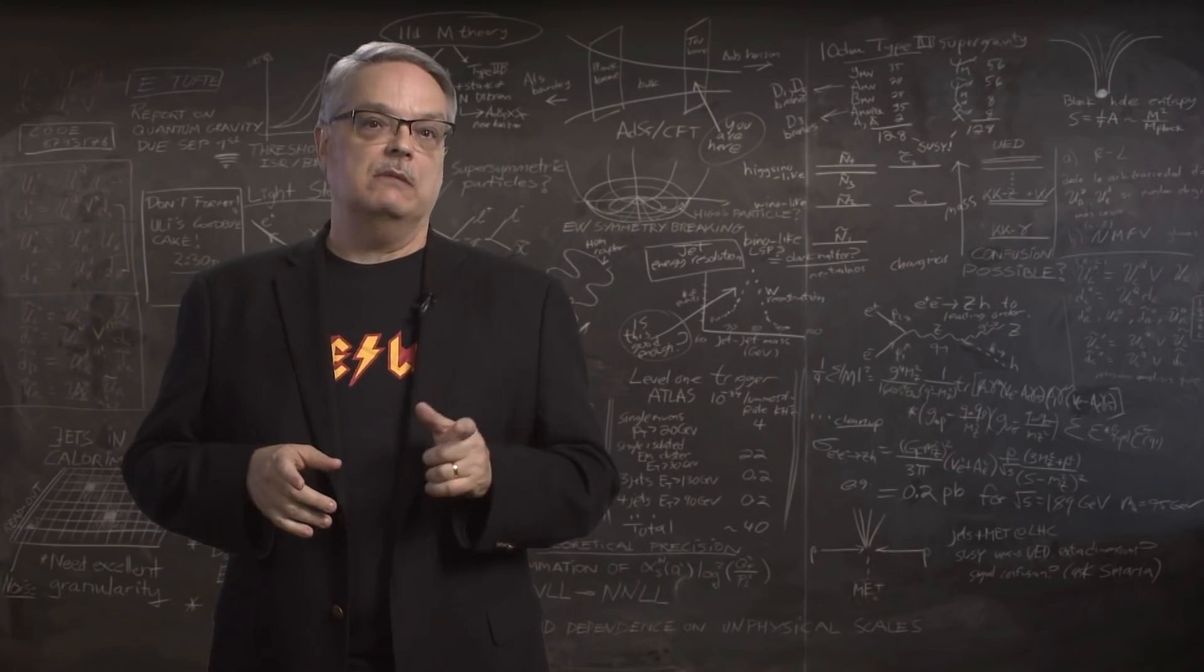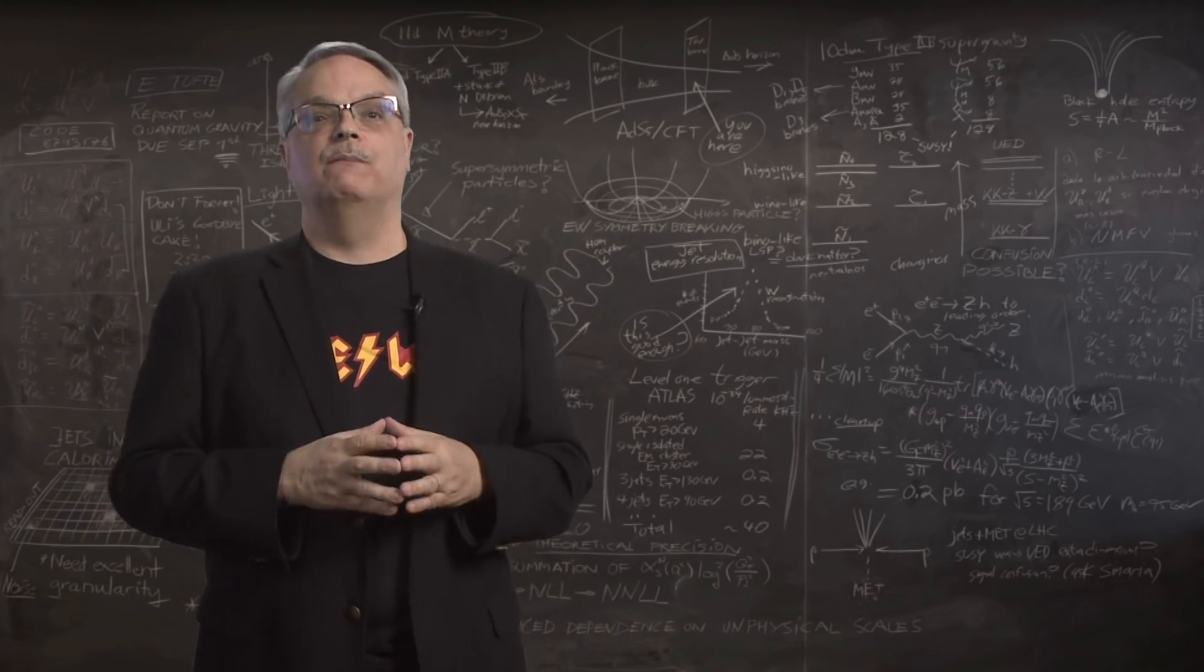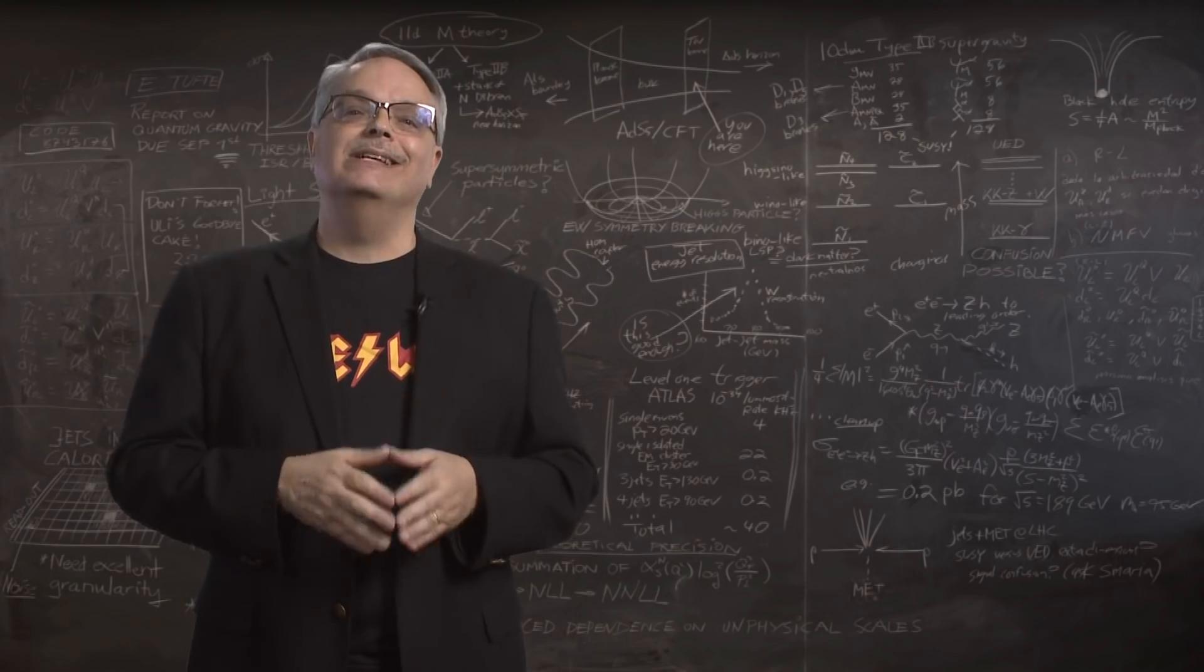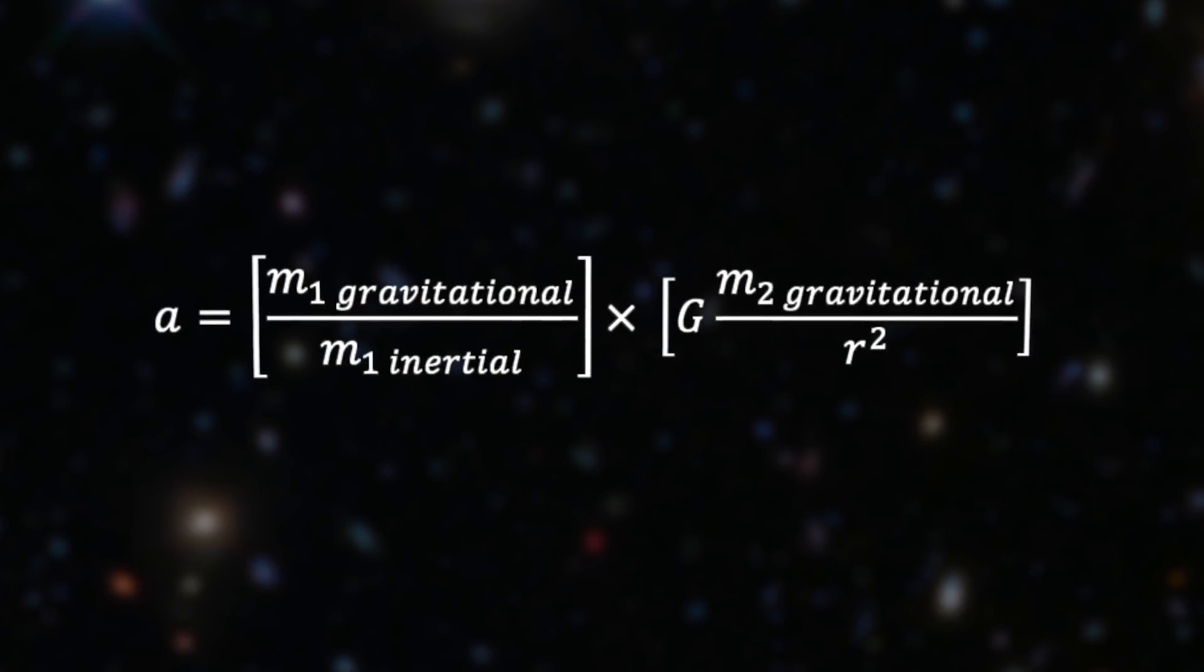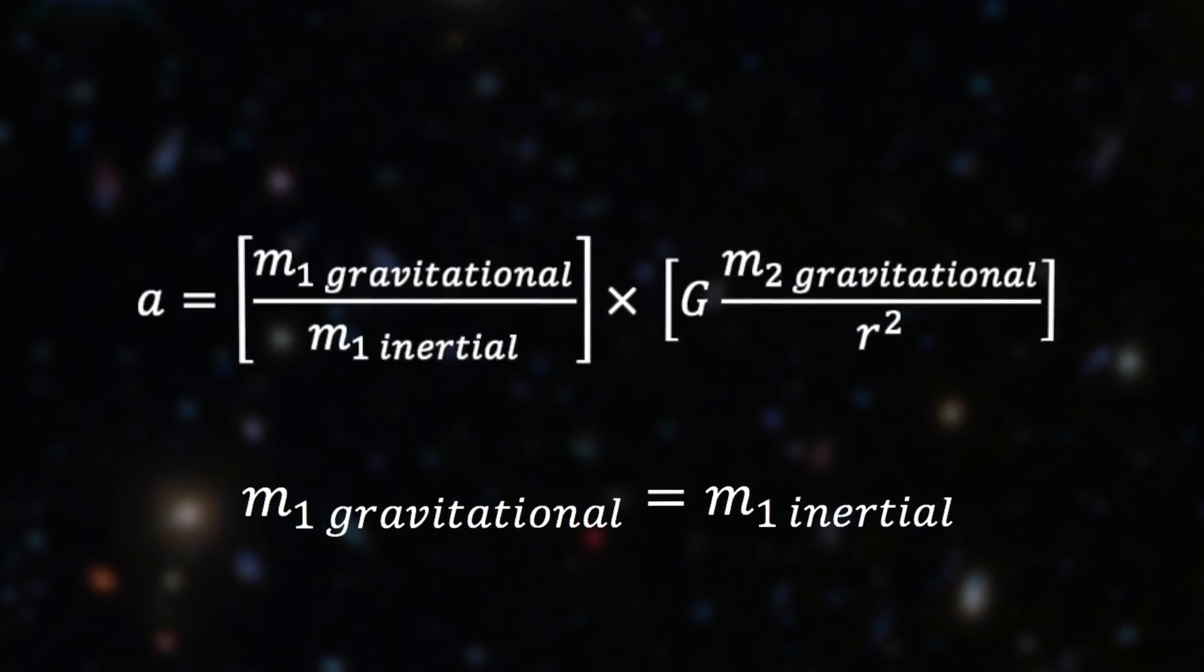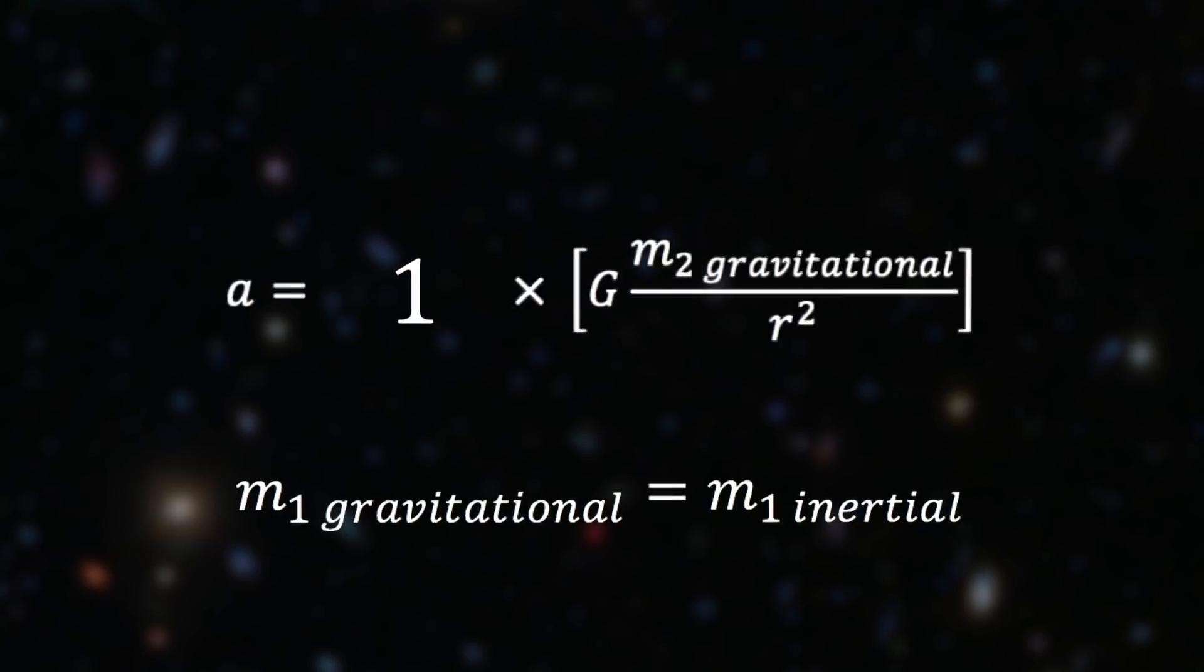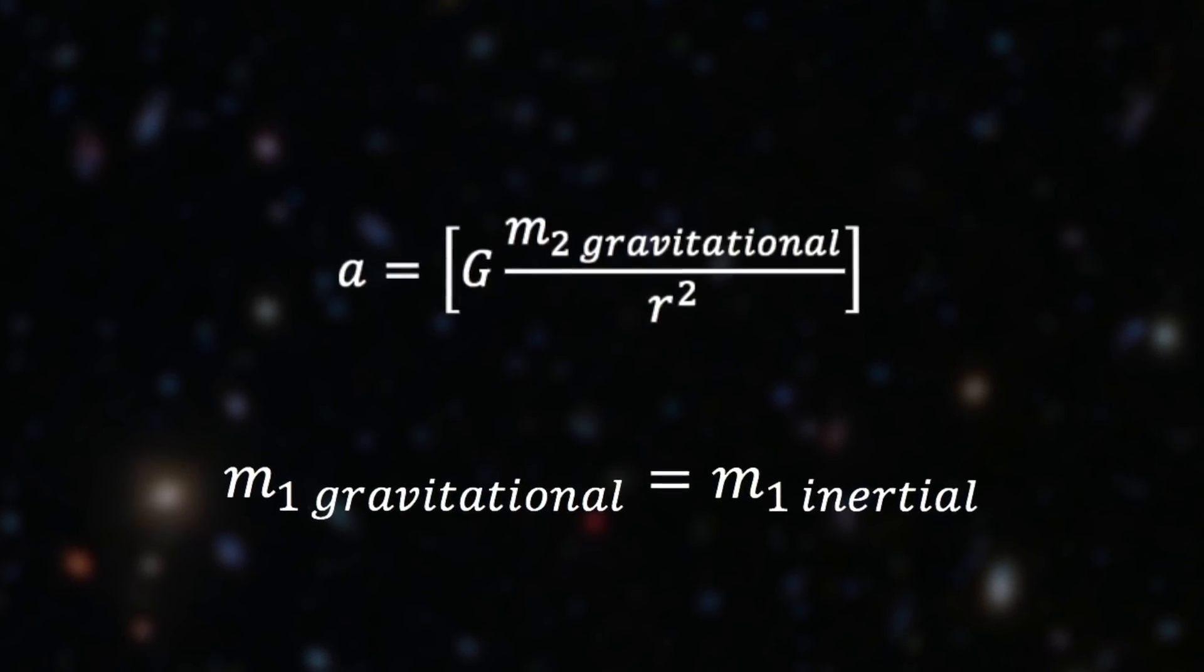But the bottom line is that the objects of different inertial or gravitational mass fall at identical rates, which means that they experience identical acceleration. And, getting back to our equation, that can only happen if the object's inertial and gravitational mass is the same. Then they cancel out in the equation and you get the formula that you might have calculated if you ever took physics.